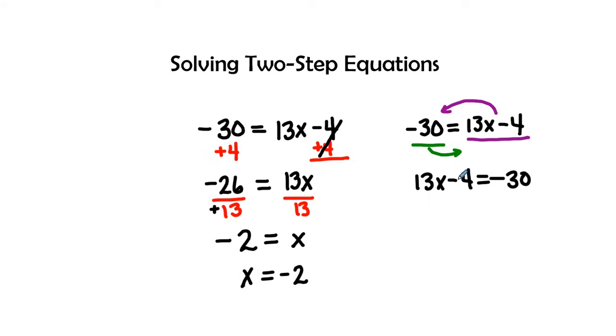So 13x minus 4 equals negative 30. Now this is a problem that we're used to seeing. All of our variables are on the left. And then we have to move anything that's attached. So this negative 4 is attached. So I'm going to add its inverse, which is a positive 4, to both sides.